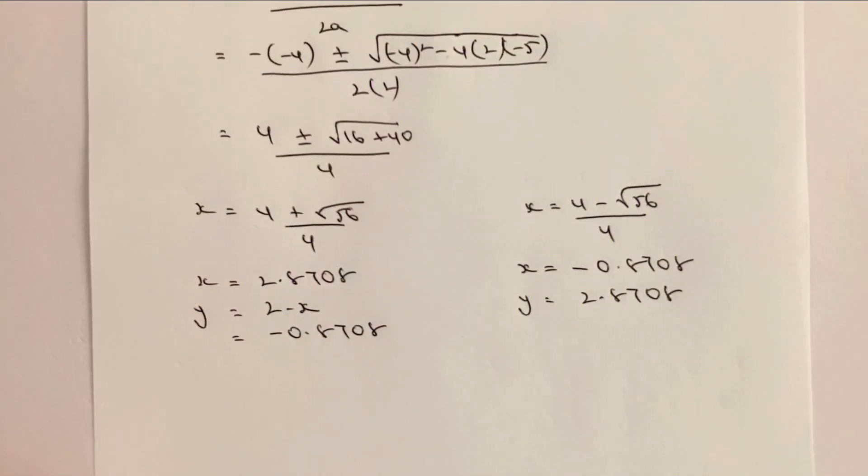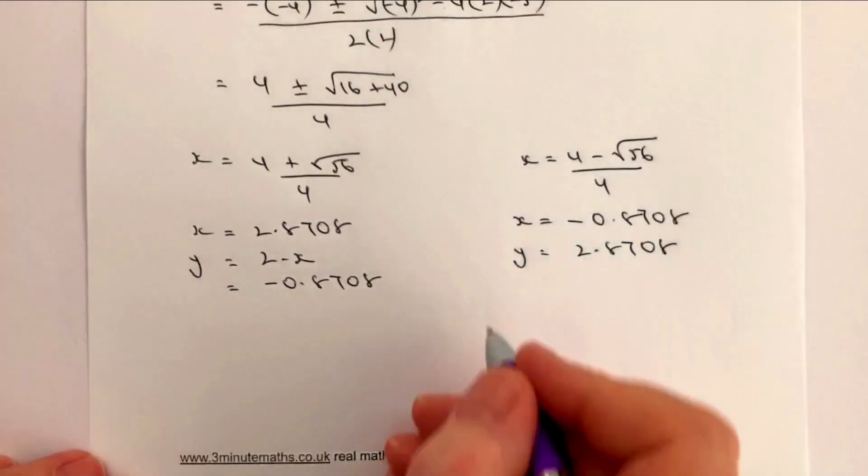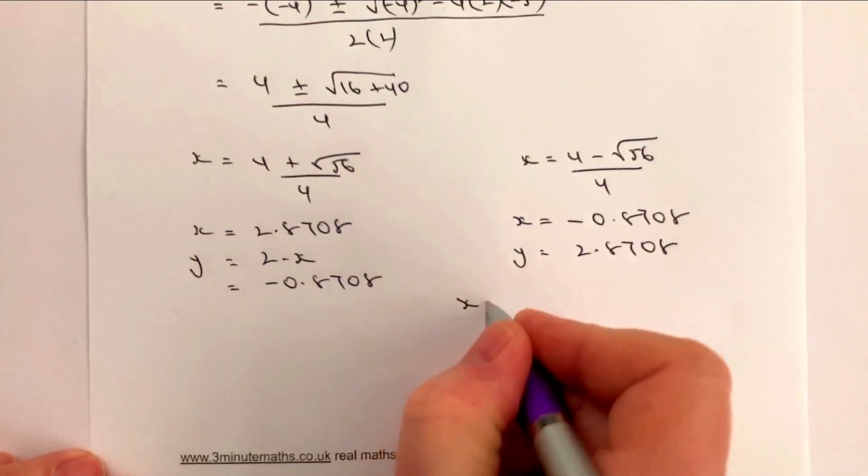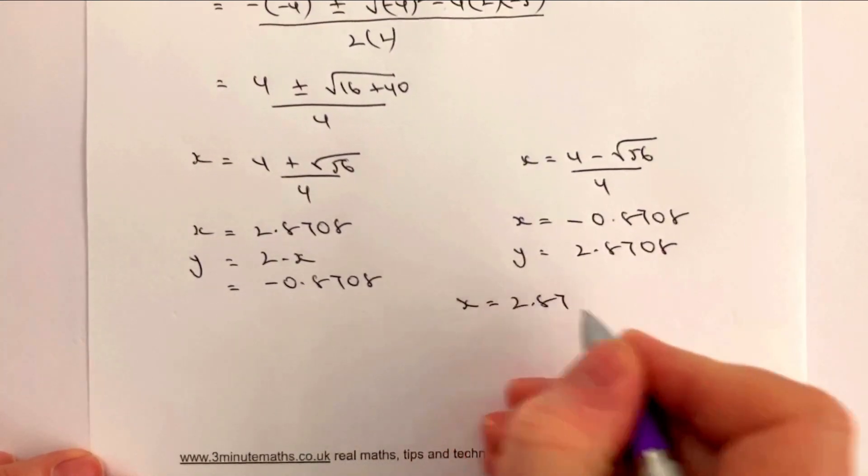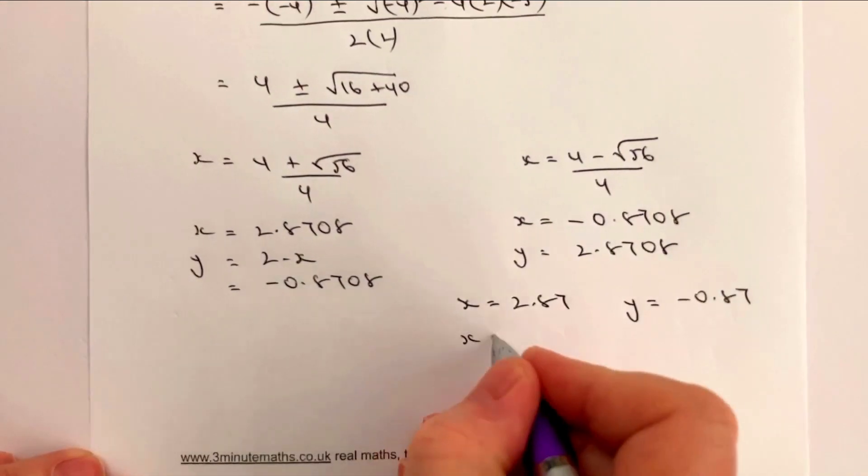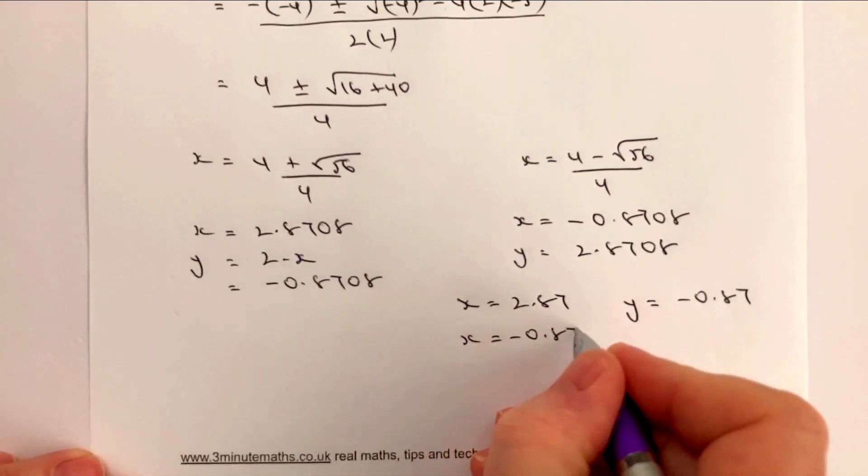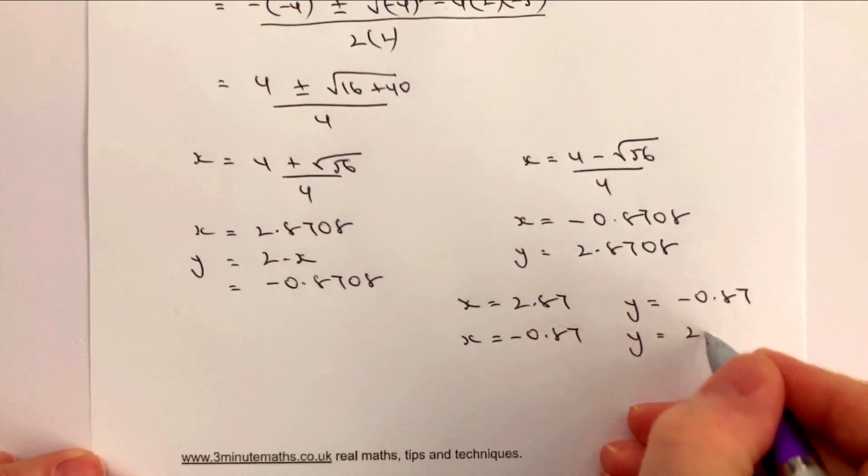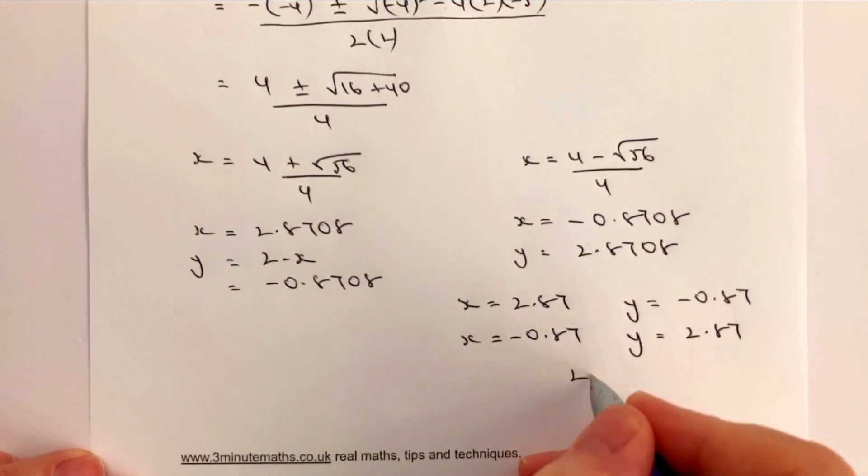Now you'll note from the original question it's two decimal places, so I would write this as when x equals 2.87, y equals minus 0.87, and when x equals minus 0.87, y equals 2.87, and that's all to 2 dp.